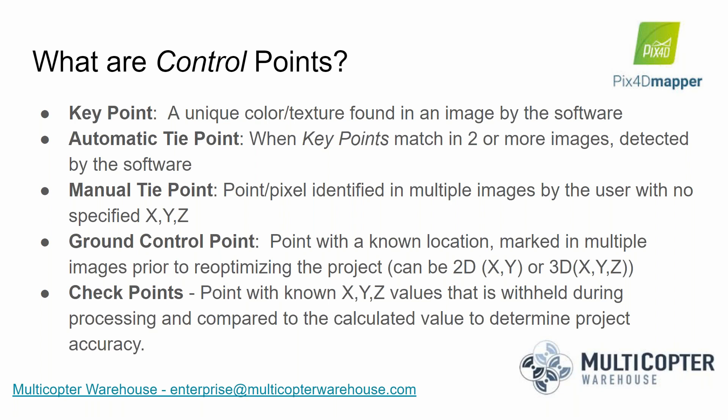The next type of point is the ground control point, which is the meat of the matter today. A ground control point is a point with a known location that you mark in multiple images. It can be a 2D ground control point with X and Y, or a 3D ground control point with X, Y, and Z. The 3D control point is definitely preferred, as it ensures appropriate altitude and elevation within your model.